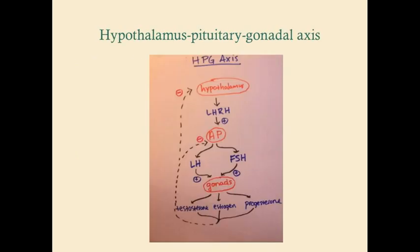First we're going to talk about LH and FSH — the hypothalamus-pituitary-gonadal axis. We call it that because the hypothalamus tells the anterior pituitary to do something, the anterior pituitary tells the target organ to do something, and then it releases the final hormone. So: hypothalamus, pituitary, gonadal axis.